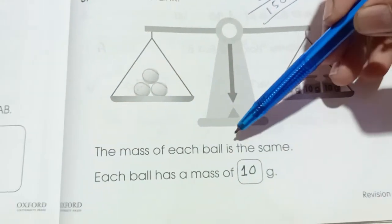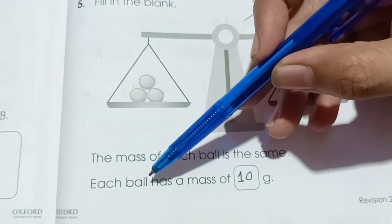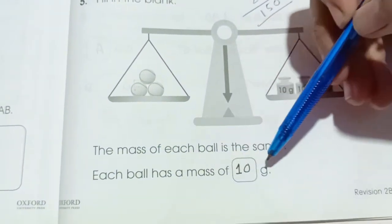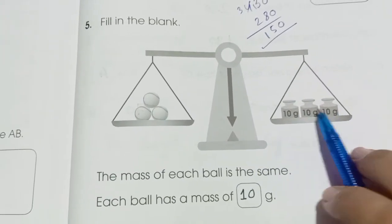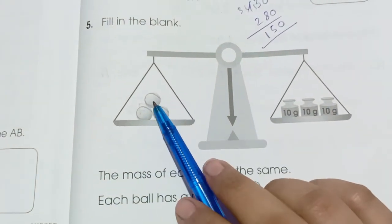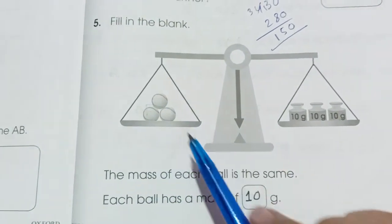Number 5, the mass of each ball is the same. Each ball has a mass of dash gram. So we can see 1, 2, 3. 30 gram, 10, 10 gram of each and we have 3 balls. So it means 10 gram of each.